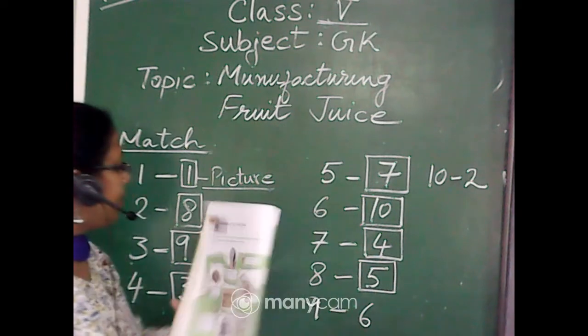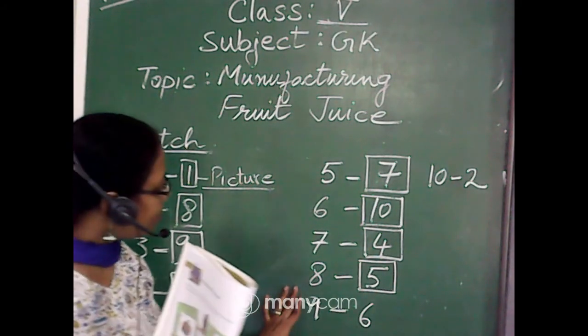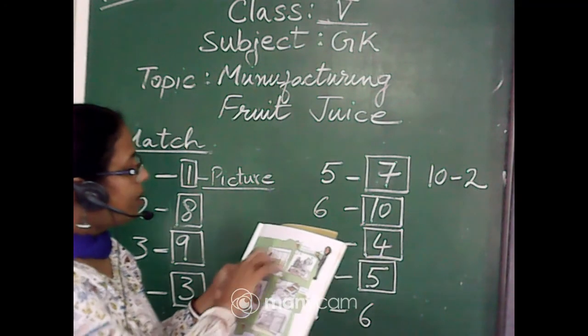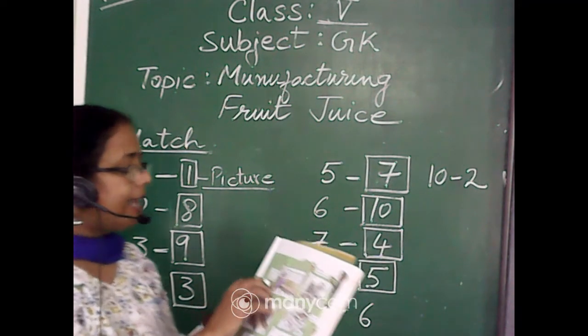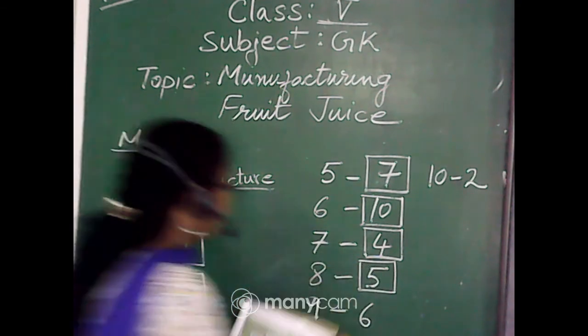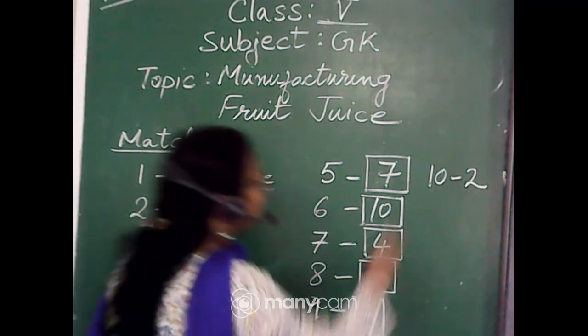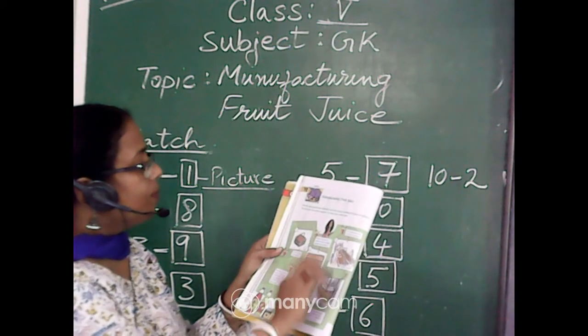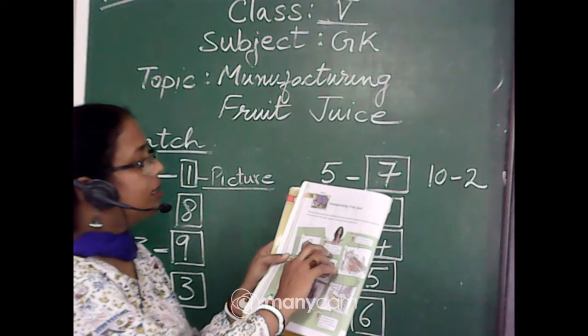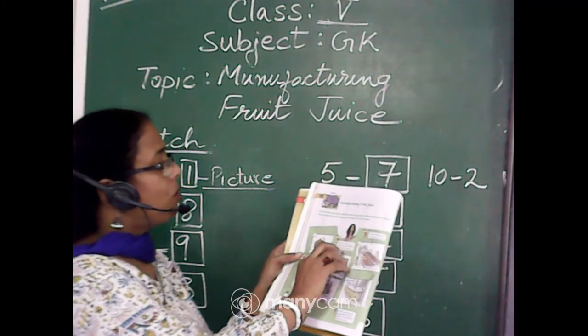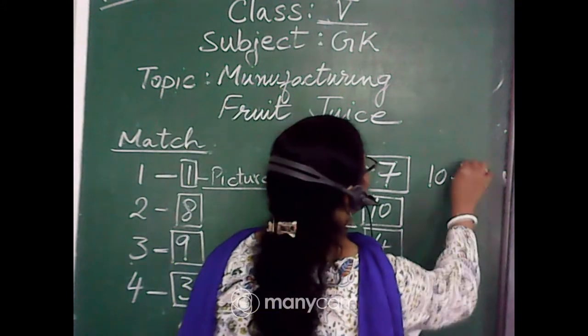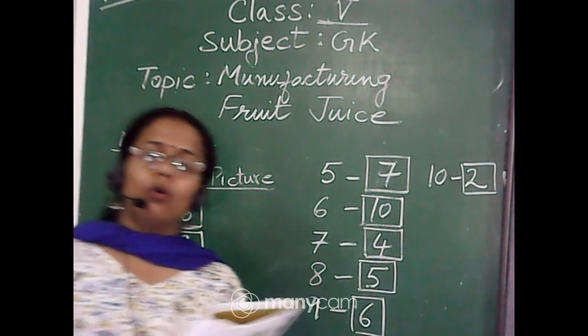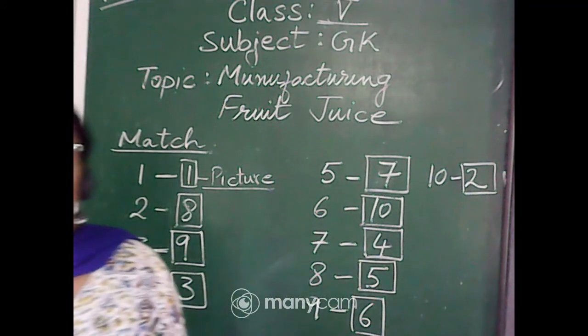And then comes number 9, step number 9 which is picture number 6, where the bottles are filled and caps are sealed. This is the 9th step. And the final step, the 10th step which is number 2, where finally the juice is cooled and the bottles labeled and stored. So here the juices are finally prepared and they are labeled and stored and being distributed to the retailers.